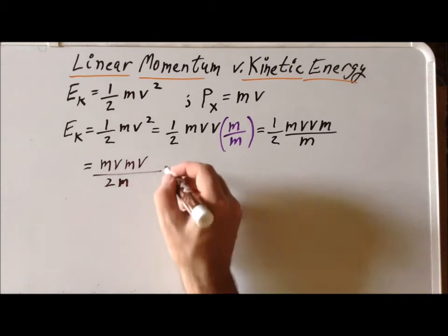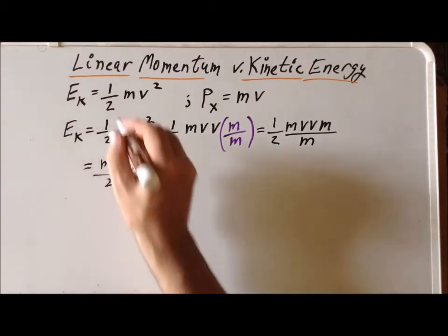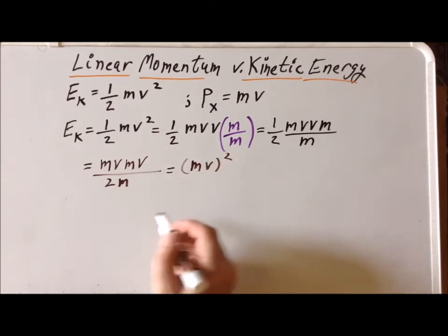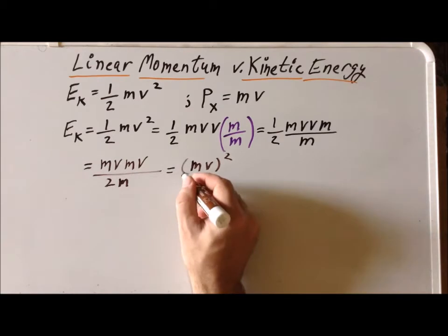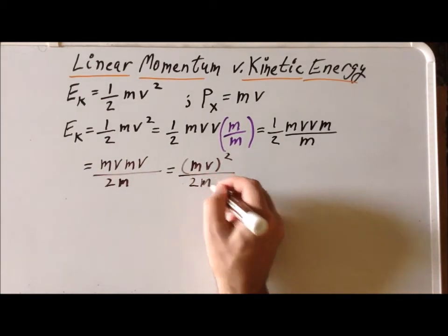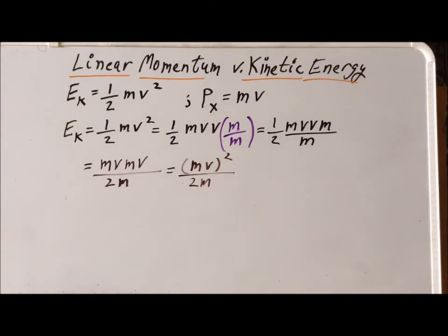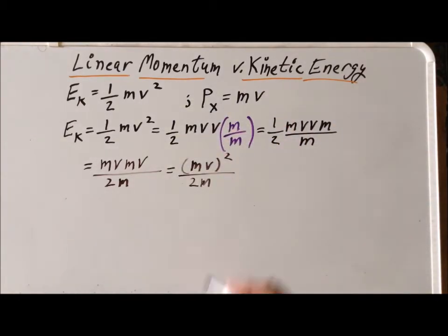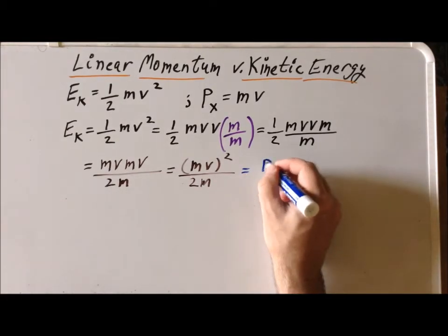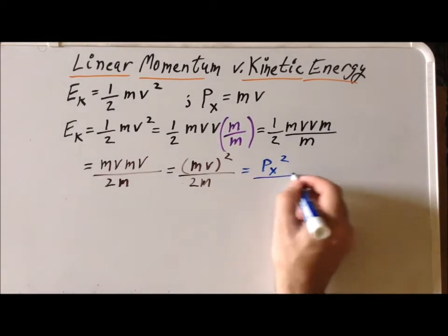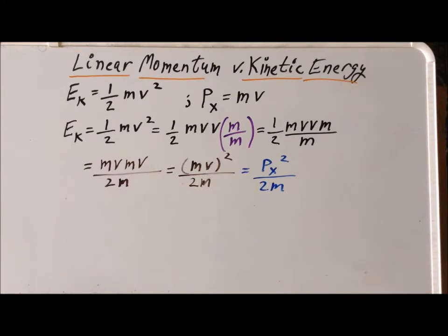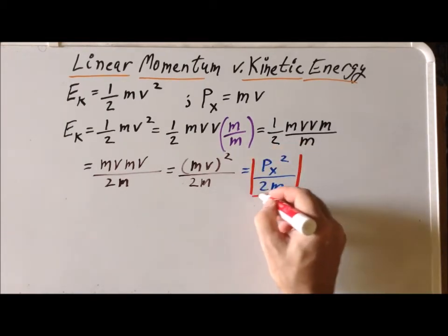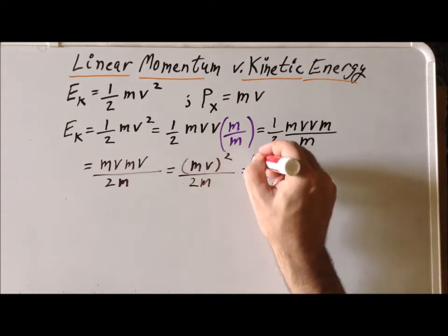Now we're going to use the definition of a square in reverse: we can write the numerator as the quantity mv squared. And we'll notice that mv is simply the linear momentum in the x direction. So we can write the numerator as px squared, and the denominator stays exactly the same, giving us the expression p squared divided by 2m. This is the expression in classical mechanics that we wanted to derive, and writing the kinetic energy in this form is often very useful.